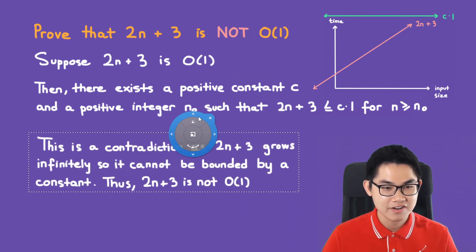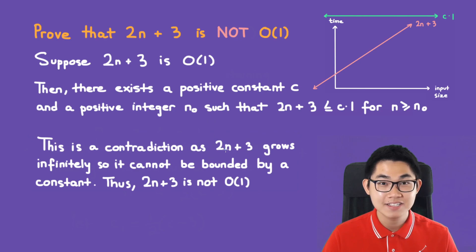Therefore, this here is a contradiction as 2n plus 3 grows infinitely. So it cannot be bounded by a constant, meaning that it cannot be less than or equal to a constant. Thus, 2n plus 3 is not O(1).